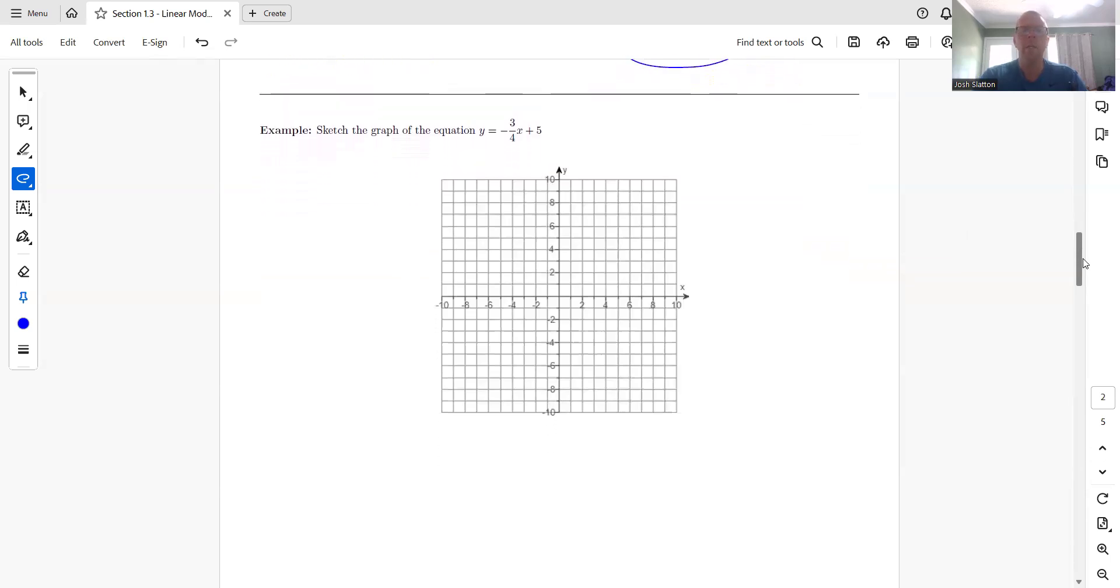So let's sketch the graph of this one. So this one, our slope is negative 3 fourths. And so what that means, we are going, this negative means we're going down.